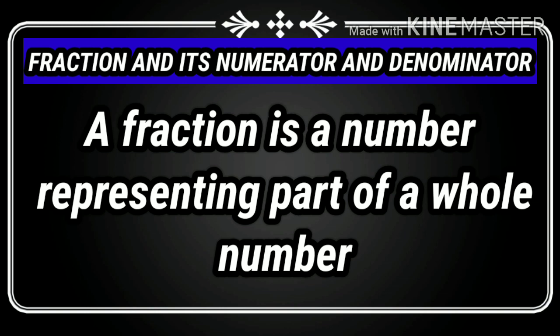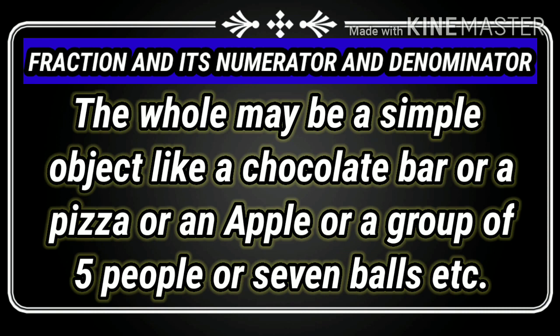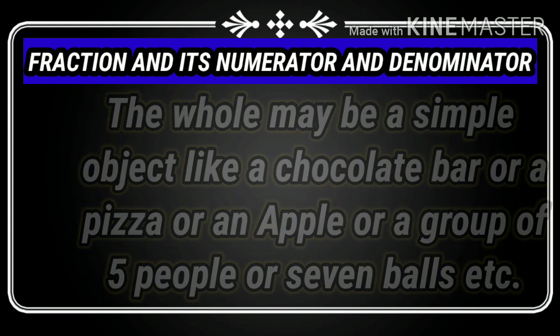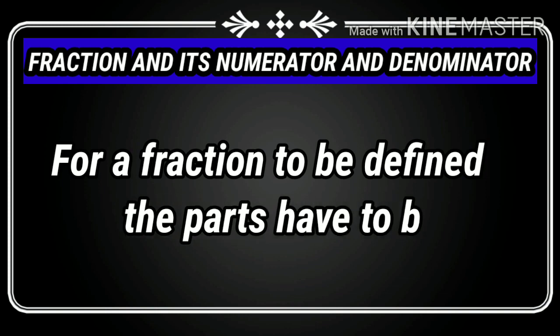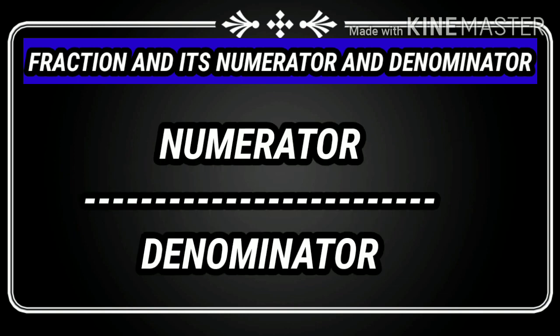Now, the next topic: a fraction and its numerator and denominator. A fraction is a number representing part of a whole. The whole may be a simple object like a chocolate bar, a pizza, an apple, or a group of 5 people, or 7 balls, etc. For a fraction to be defined, the parts have to be equal. A simple fraction has two parts: numerator and denominator. In your previous class, you have already learned what numerator and denominator are.